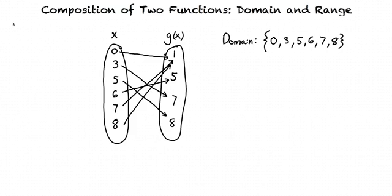We aren't able to put any other values into our function. The range of a function is all the values we get for that function. So in the example here it would be 1, 5, 7, and 8. We don't get any other values for the function.